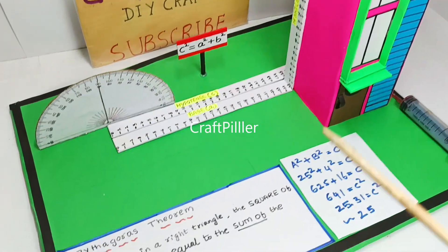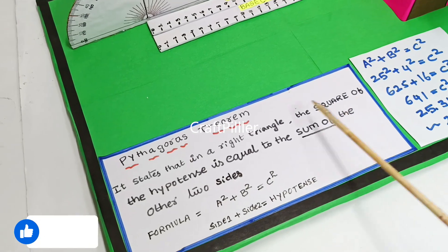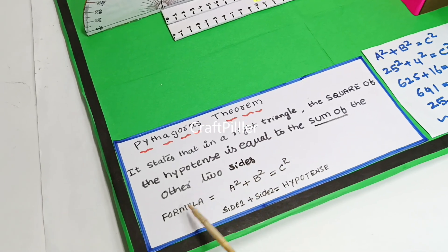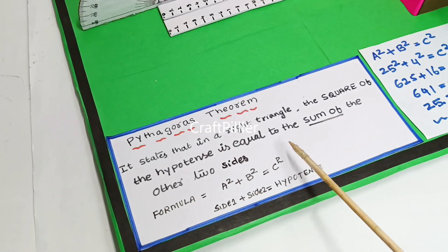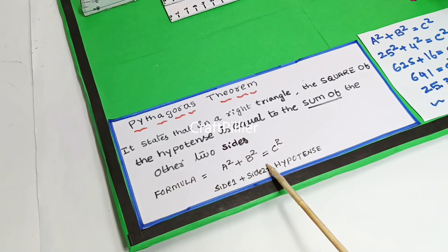The Pythagoras theorem states that in a right angle triangle, the square of the hypotenuse is equal to the sum of the other two sides. The formula for this is A square plus B square equals C square, where C square is the hypotenuse and A square and B square are side one and side two.